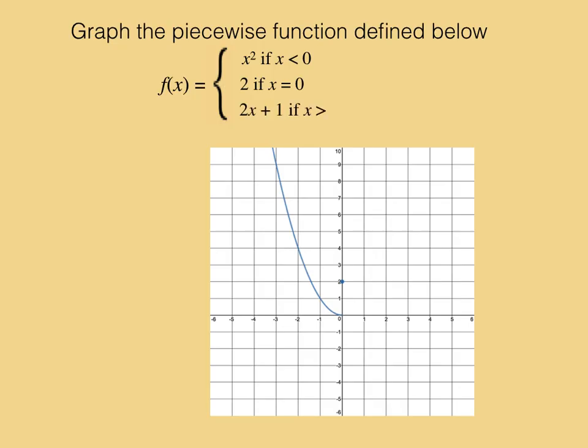And the third piece is f of x equals 2x plus 1 if x is greater than 0. So that is a line, a linear function, going through the y-axis at 1 with a slope of 2. And there would be an open circle at 0, 1.